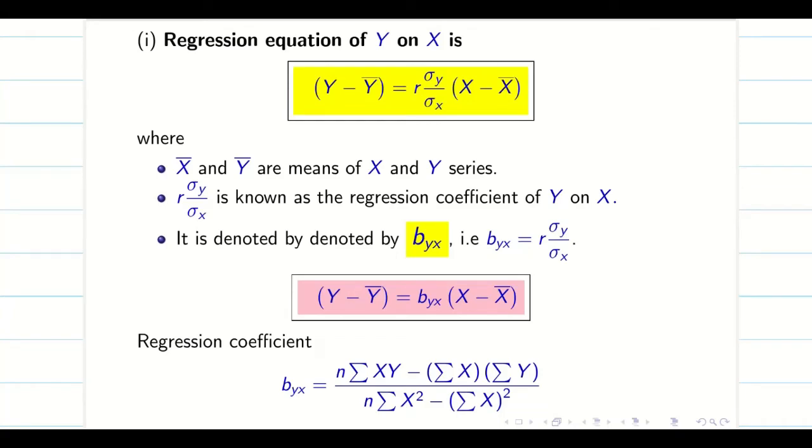Dear friends, we are going to continue problems on regression. Whenever we think of regression, we have two regression lines: x on y and y on x. We know all basic properties of both correlation and regression. If you missed the video, click the description, find the link, watch the videos, and come back to the problems.